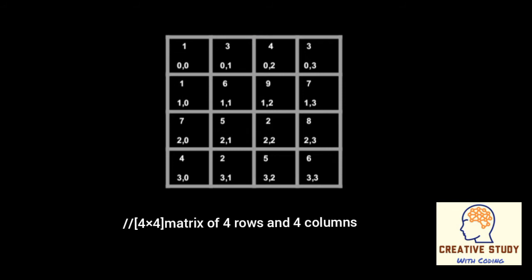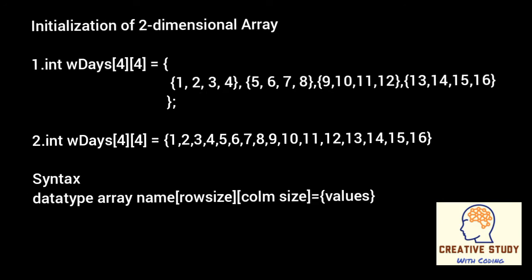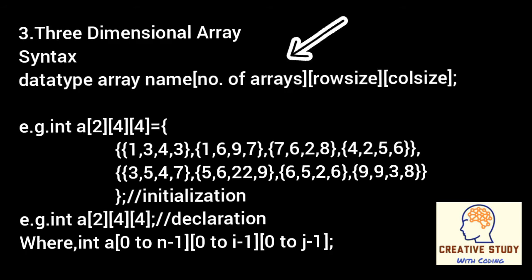There are two ways to initialize a two-dimensional array: data type, array name, row size, column size, equal to values in curly braces. Although both initializations are valid, I recommend using the first method because you can visualize the rows and columns of the two-dimensional array more easily.